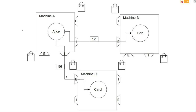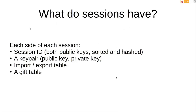Connections are imported and exported at the import and export tables, with numbers denoting which position they're imported and exported at — for example, 12 and 56 as random examples. Each session has certain attributes: a session ID which is both public keys sorted and hashed so it's the same on each side, a key pair individual to the machine, and the import/export tables and gift table as shown.